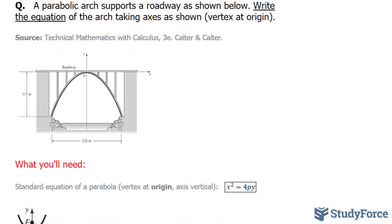Let's begin by analyzing the parabola as shown. The parabola has the vertex 0,0, and it extends 115 meters downwards. That's shown right here.